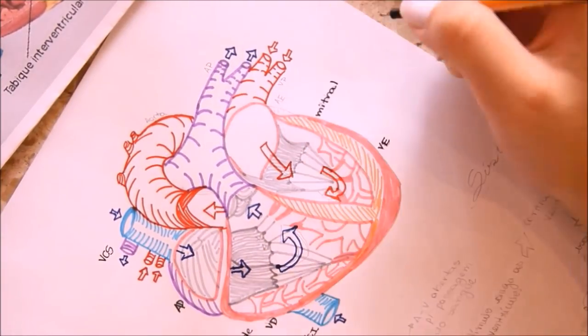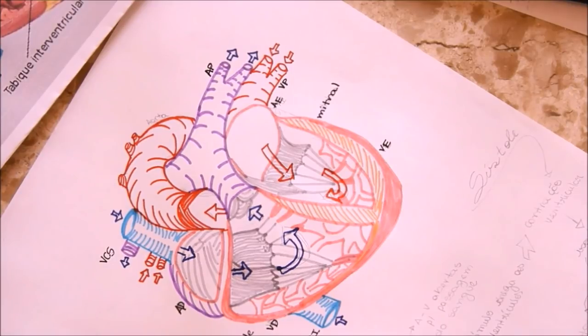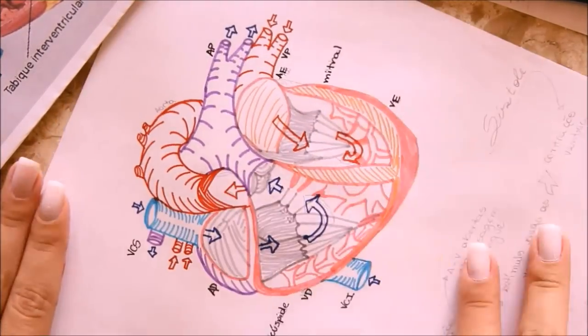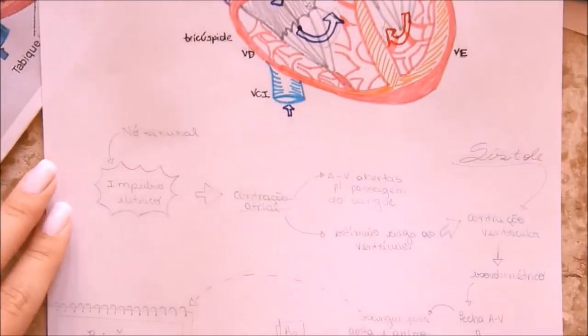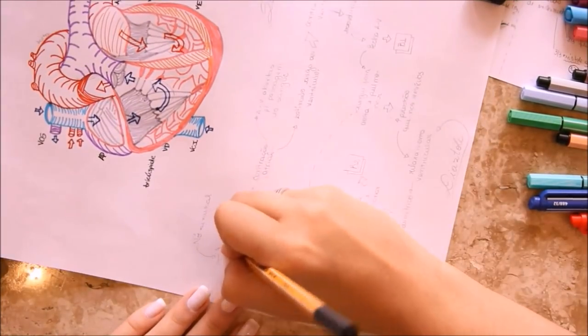After that, I grabbed the Stabilo Point 88, our famous one, to do the anatomical part, put the anatomical terms around each part of our heart. And now, let's go to our scheme.